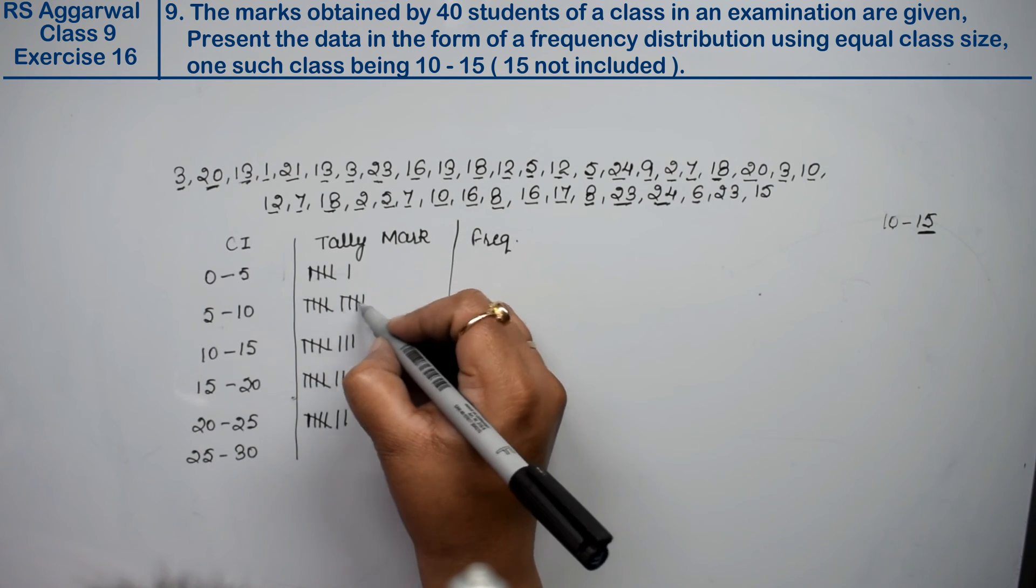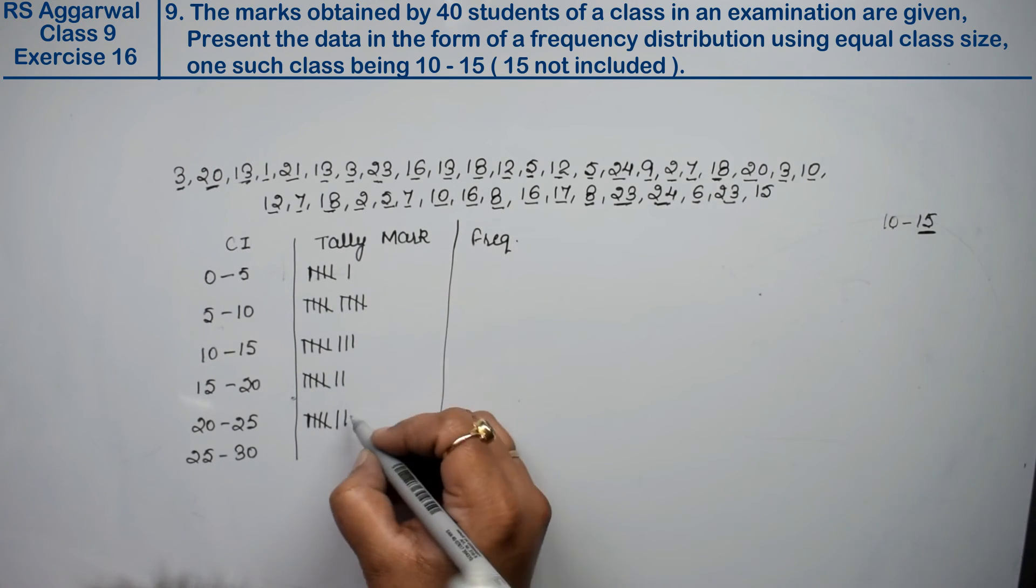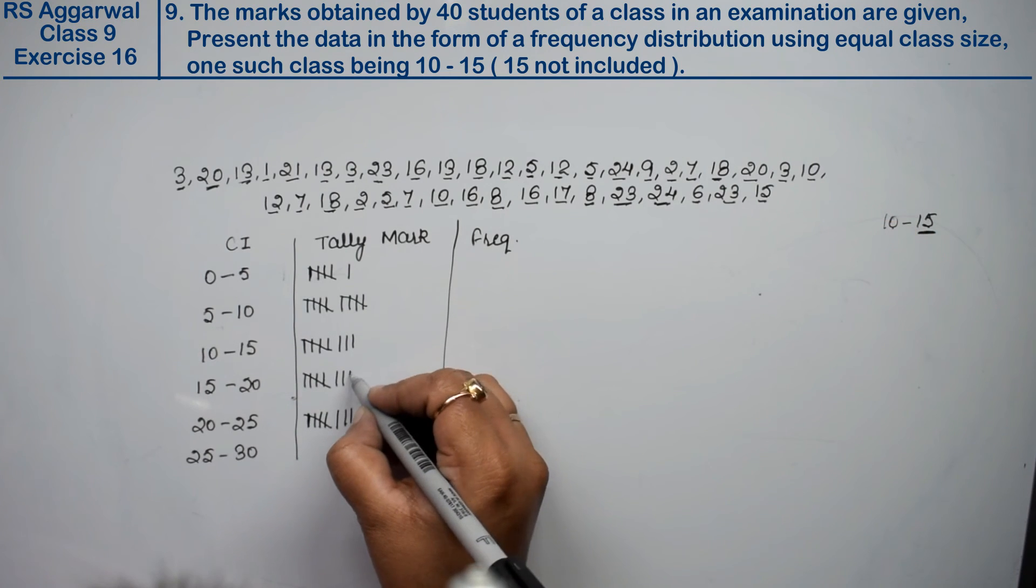Then 23 in 20 to 25, 22 in 20 to 25, 25 in 20 to 25, 24 in 20 to 25, 22 in 20 to 25, 25 in 20 to 25, 6 in 5 to 10, 23 in 20 to 25, 22 in 20 to 25, 25 in 20 to 25, 15 in 15 to 20.